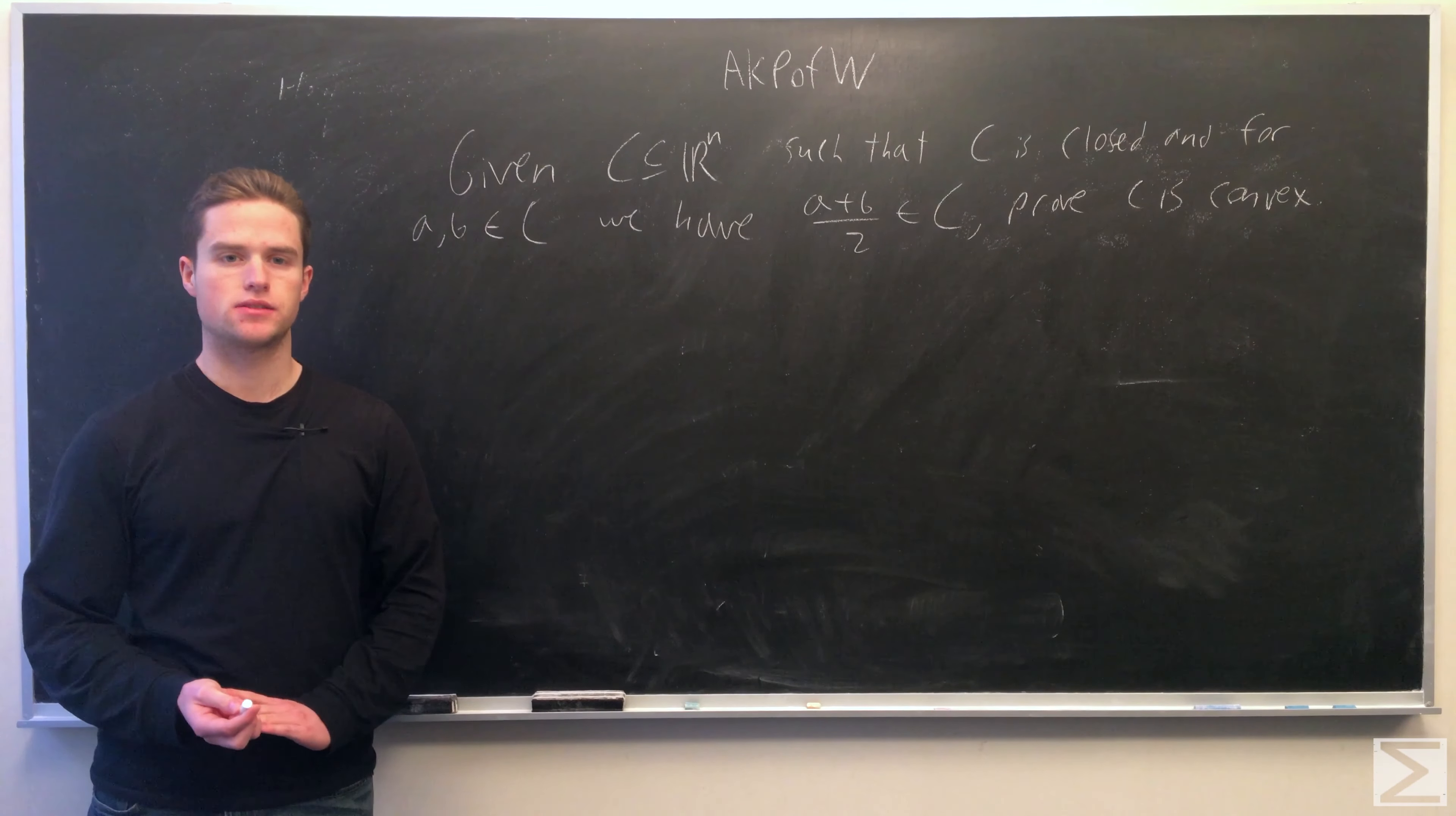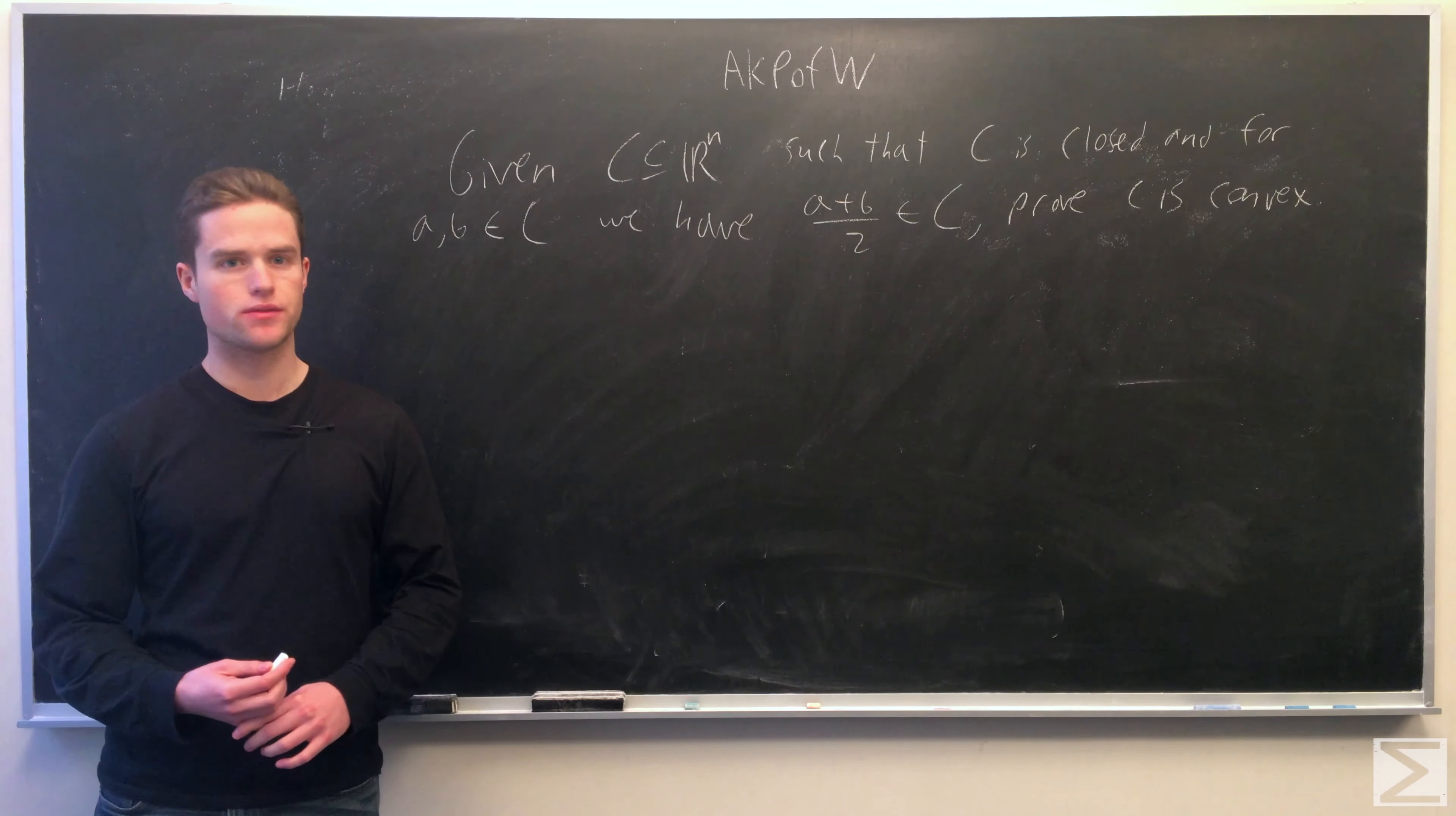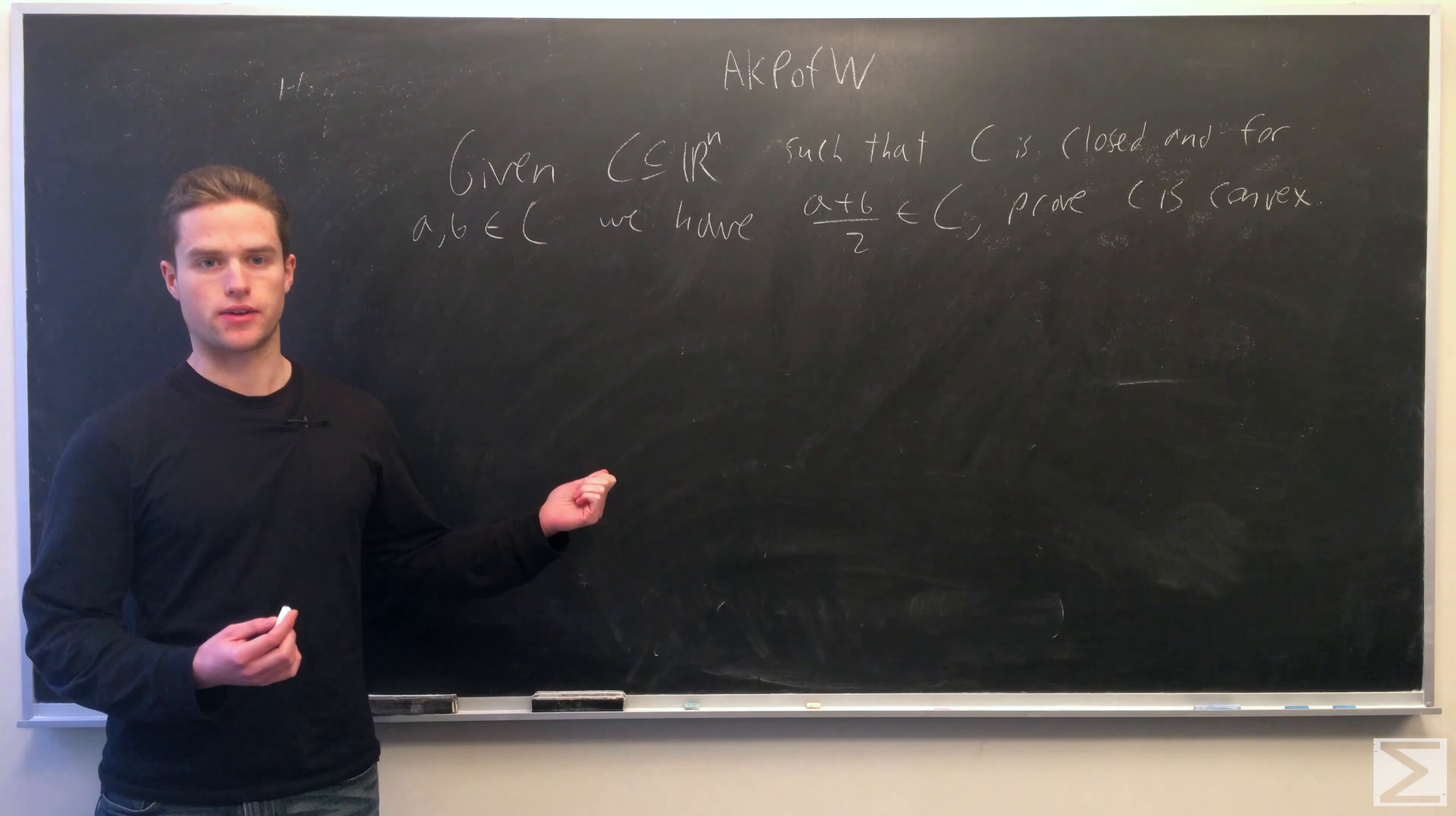Welcome to Center of Maths, Advanced Knowledge Problem of the Week. For this week's problem, we're given a set C in R^n, and we're given that C is closed and midpoint convex. So for any A, B in C, we have A plus B over 2 in C. The midpoint of any two points in C is also in C, and we want to prove that C is convex itself.